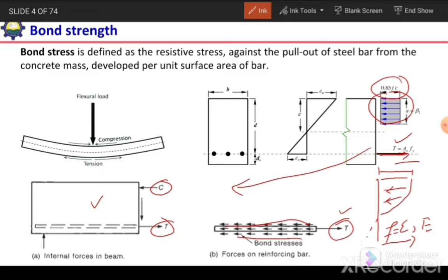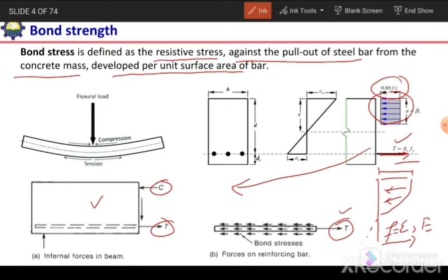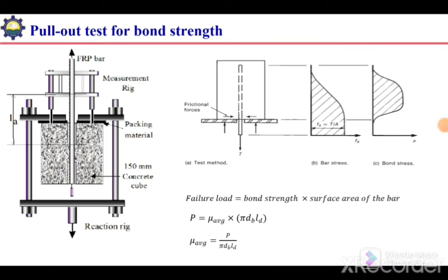Now we can revisit the definition: bond stress is a resistive stress against the pullout of the steel bar from the concrete mass, and it is the resistive stress per unit surface area of the bar. So it is termed as bond stress.